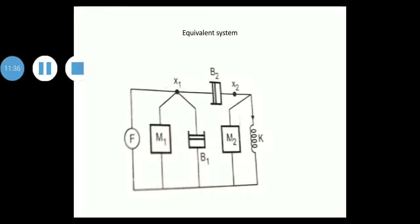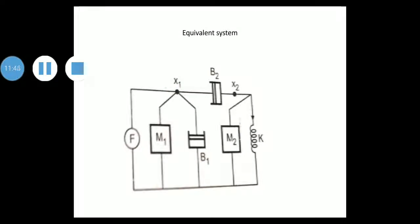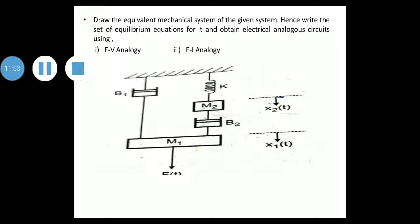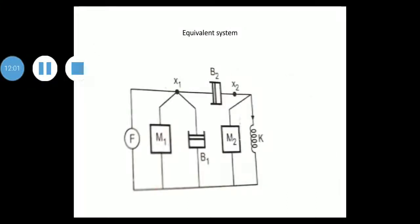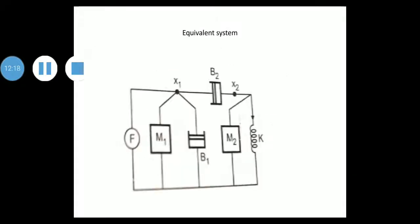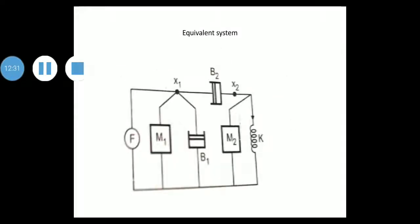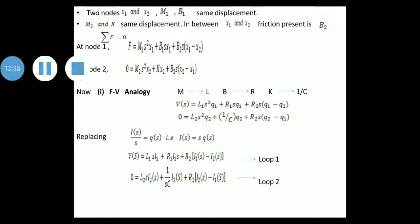This is the equivalent system. How to draw it: there are two displacements, so represent them as nodes X1 and X2. Between the two displacements, element B2 (friction) is present, so draw B2 between X1 and X2. At node X1, the elements present are M1, B1, and force F. At node X2, the elements present are M2 and K. M1 and B1 share the same displacement at node X1; M2 and K share the same displacement at node X2.